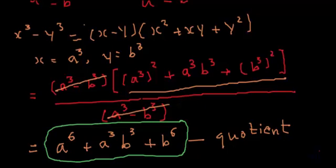This was pretty simple. It can be done using the long division method also, but that will be very lengthy. I would prefer identifying the expressions, using the identities, and making the division simple rather than using the long division method.